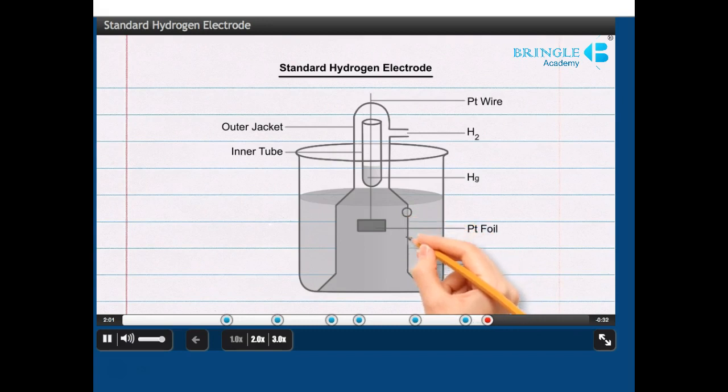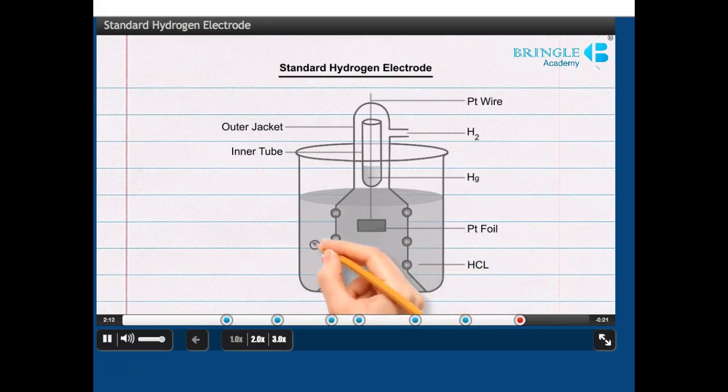Draw small circles on the sides of dome-shaped structure, 3 on the right side and 3 on the left. Ensure that the circles are equidistant from each other. Also, draw two circles each on the left and the right side respectively of the dome-shaped structure. This completes the diagram of standard hydrogen electrode.